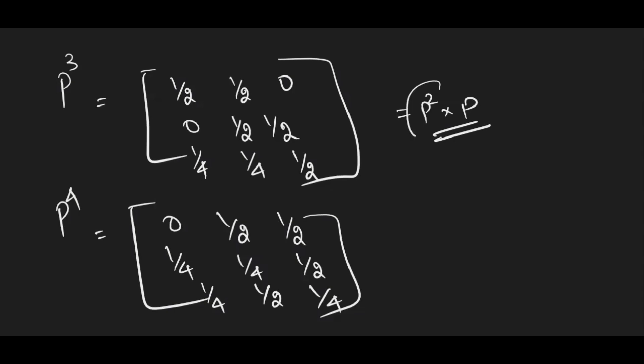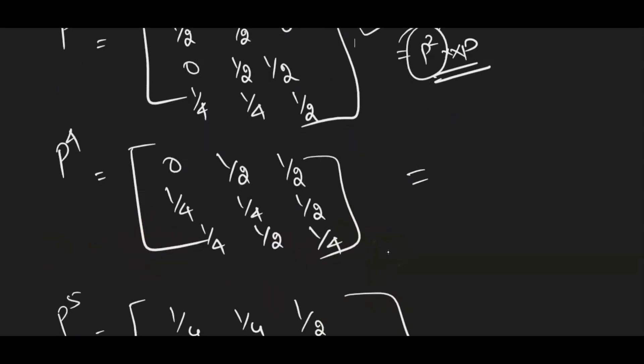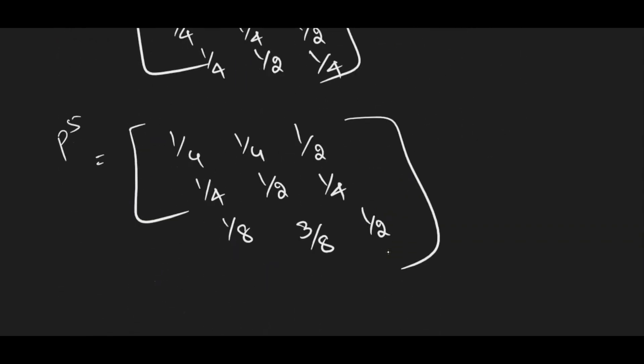P³ is nothing but P²×P. So if you already, whatever P² answer you have got, if you multiply with P, you will get P³. And the same way, check P⁴ which is nothing but the previous answer P³×P again. And finally, P⁵ is again nothing but your previous answer P⁴×P. So at least if they ask regular stochastic matrix, at least do 5 iterations.